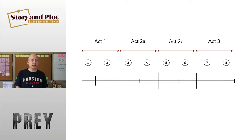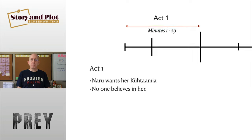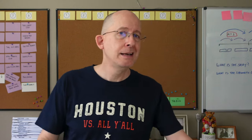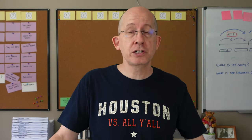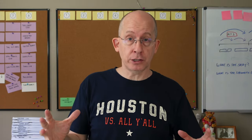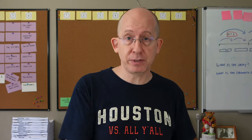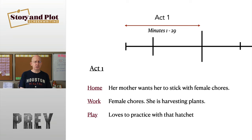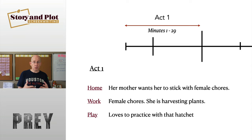In Act One of Prey we establish the protagonist Naru, a young Native American who wants her Kutamiya — her challenge as a hunter — to hunt something that is hunting her, so she can prove herself. No one in the village really believes in her; she's the only one who believes in herself as a hunter. We establish this by seeing Naru at home, work, and play: at home she talks to her mother, who wants her to adhere to more traditional parts of society.